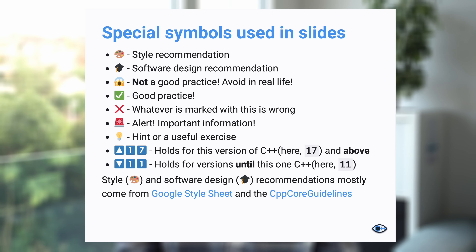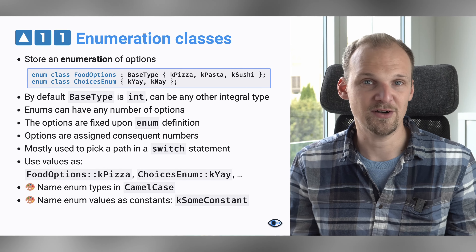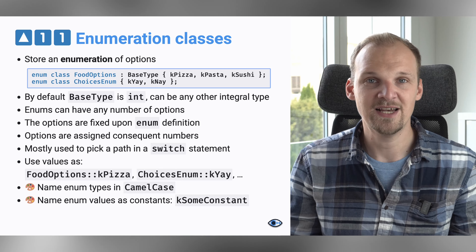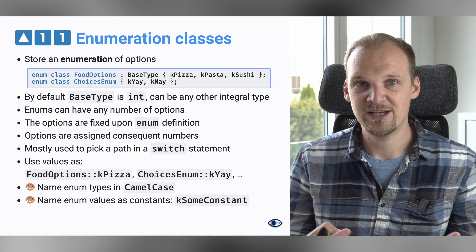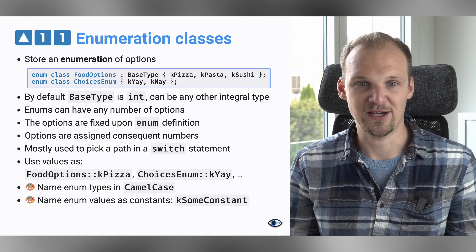I start by showing the special symbols that I use on my slides, but with this out of the way, let's talk about the enumeration types, or classes. The way they look is you type enum class, then the name of your enum class, and then you basically specify the options that you want to have.